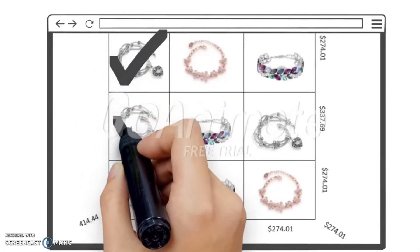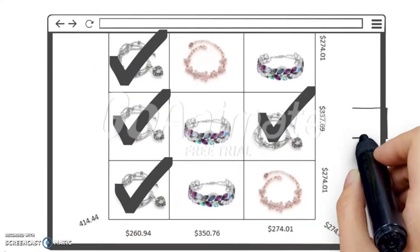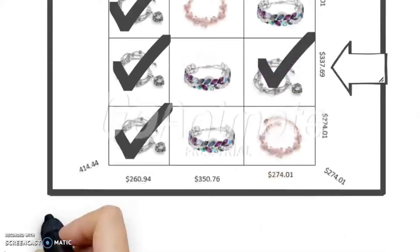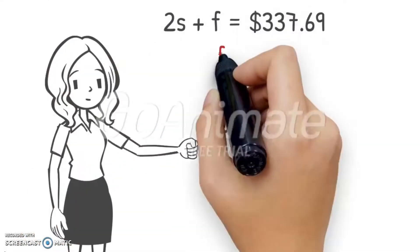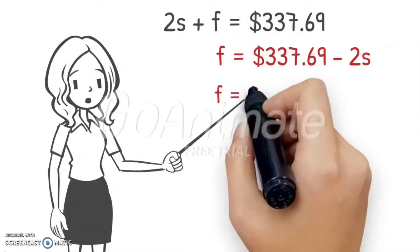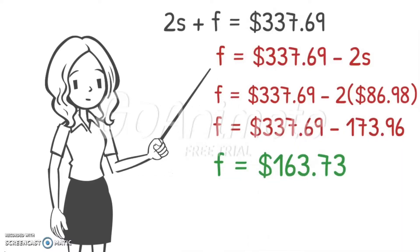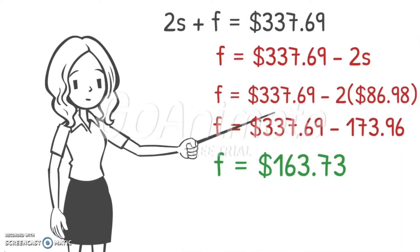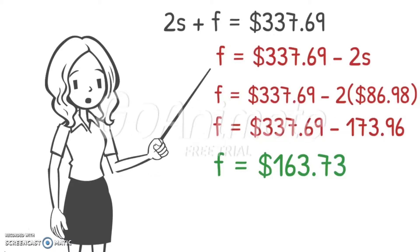Now we know what the silver bracelet values are in the table, so we'll continue with column two because there are already two silver bracelets identified. The equation is 2S + F = $337. If we plug in the value for the silver bracelet, we can find out that the flower bracelet is worth $163.73. Wasn't that easy?